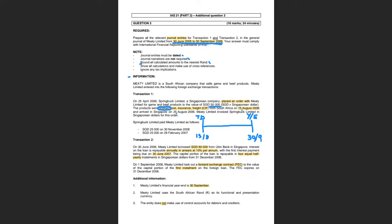Now let's read Transaction 2. On 30th June 2006, Meaty Limited borrowed 60,000 Singaporean dollars from Urban Bank in Singapore. The interest on the loan is repayable annually in arrears — that tells us we need to create an additional creditor, which we sometimes call interest payable or accrued interest. The interest rate is 10% per annum, so if we're only preparing for part of the year, we need to remember to prorate.